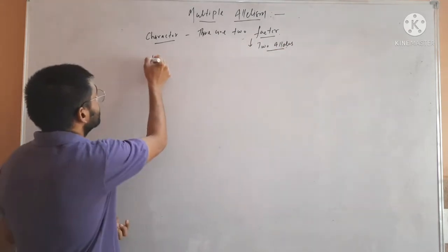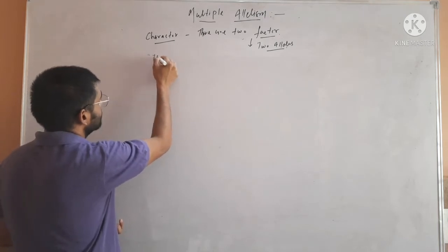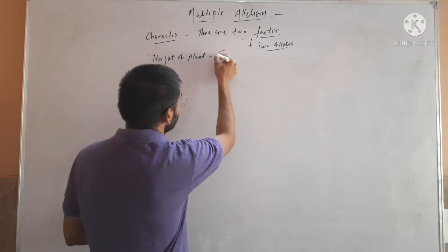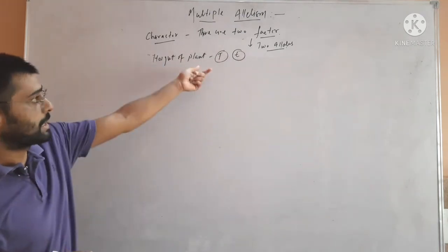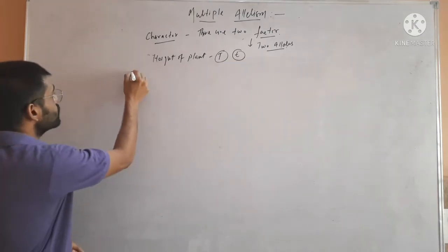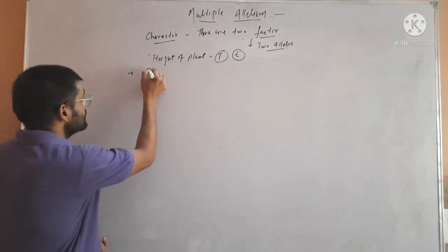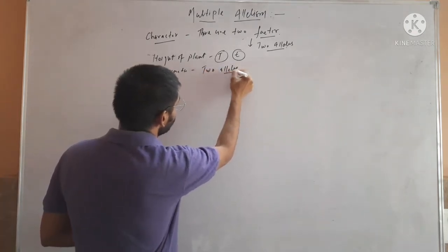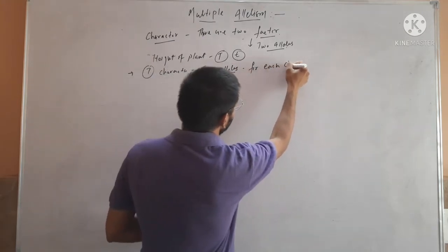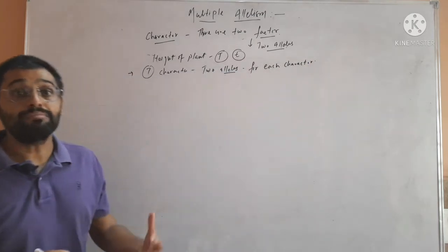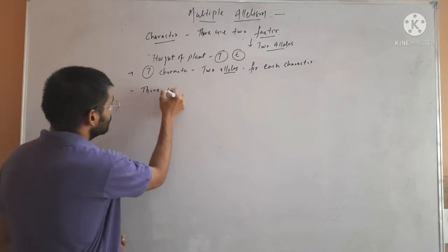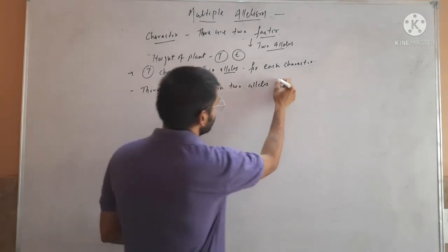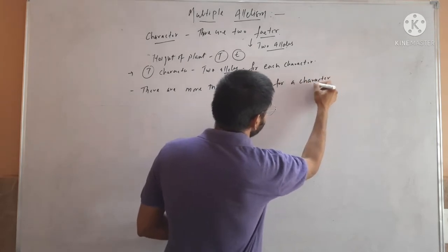For example, we are taking height of a plant as a character. We know that here only two alleles are there: capital T and small t. And for all the characters that Mendel took during his study — the seven characters — there were two alleles for each character. But in some cases, there are more than two alleles for a character in a population.